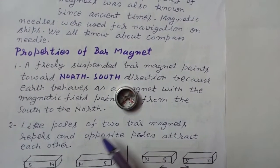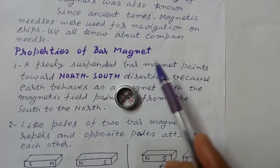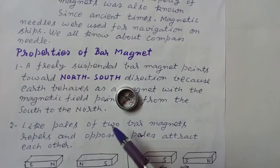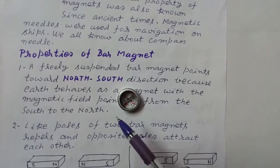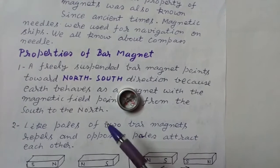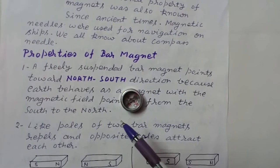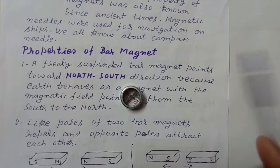Why does it orient in the north-south direction? Because there is a magnetic field due to earth's magnetism, and its direction of field lines is from the south pole to the north pole.